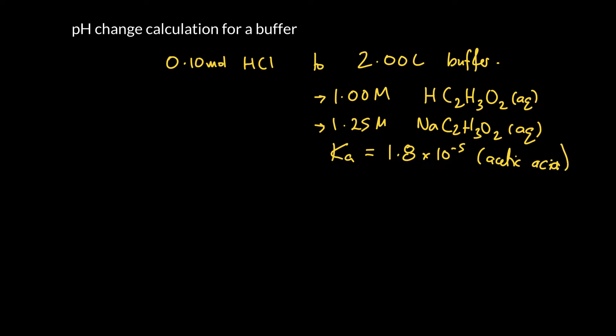All right. So we're going to start with number of moles. We need to find the number of moles of the weak acid and its conjugate base. Here's our acetic acid. We've got 2 liters of buffer, and our acetic acid is 1 molar. So that means there's 1 mole per liter. I'm just going to write HA because I'm lazy. So we can see that is 2 moles of the acetic acid.